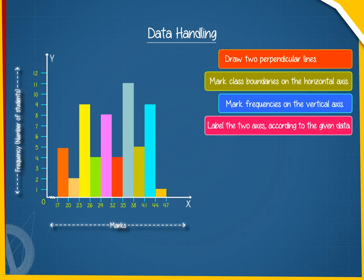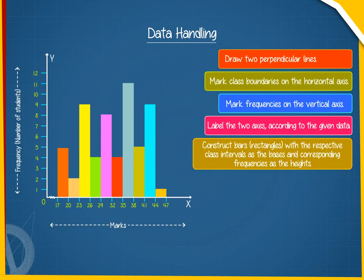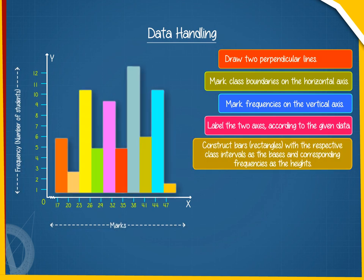Label the two axes according to the given data. Construct bars, rectangles with the respective class intervals as the bases and corresponding frequencies as the heights.